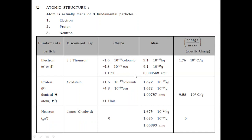Similarly, for proton, which is discovered by Goldstein, its charge will be positive. The mass of proton is 1.672 × 10⁻²⁷ kg or 1.672 × 10⁻²⁴ grams, and in terms of amu it is 1.00757 amu, and the charge-by-mass ratio for proton is 9.58 × 10⁴ coulombs per gram. Neutron was discovered by James Chadwick, which has a neutral charge, with mass slightly greater than that of proton — 1.675 × 10⁻²⁷ kg or 1.675 × 10⁻²⁴ grams, or 1.00893 amu.